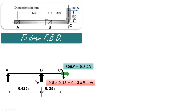The 800 N force is converted to kilonewtons, giving 0.8 kN, and the 150 mm distance is converted to 0.15 m. This creates a clockwise moment about point C. So 0.8 into 0.15 equals 0.12 kilonewton meter, which is the end moment created by the original 800 N force at the perpendicular distance of 150 mm.